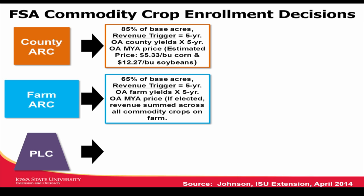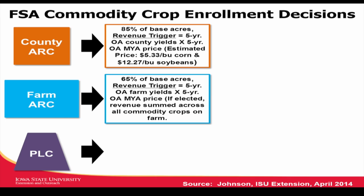Farm ARC is different. It pays on 65% of the base acres. Remember, county ARC pays on 85%. So there is an inherent value of county ARC because it pays at a higher percent. It's the same type of revenue trigger — it's a five-year Olympic average yield, throwing out the high and the low, the most recent five years. For 2014, we'll use 2009 through 2013 and the same types of prices. Here's the biggest difference between county ARC and farm ARC, other than the yields and the percent of base: if you sign up for farm ARC, you have to combine all commodity crops together on that farm.